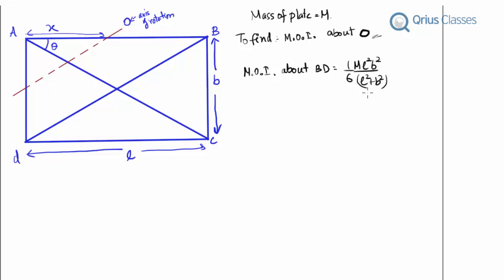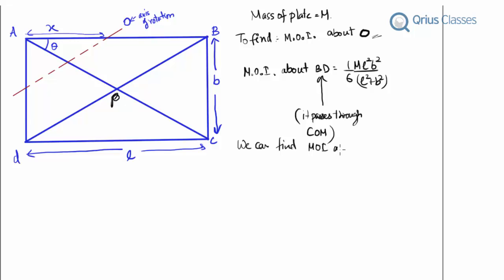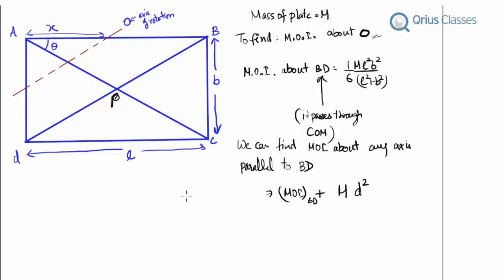This BD axis passes through the center of mass. We know the moment of inertia of a body about an axis which passes through the center of mass. If we know that, we can find the moment of inertia about any axis parallel to that one using the parallel axis theorem: I = I_BD + m·d².